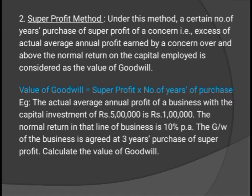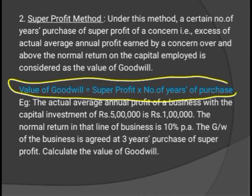Similarly, in the second method we use the same structure but with a change: super profit is the base. So the formula is: value of goodwill = super profit × number of years of purchase. Super profit is the excess of actual average annual profit over and above the normal return on capital employed in a particular line of business — meaning your business earns additional or excess profit compared to the normal return.